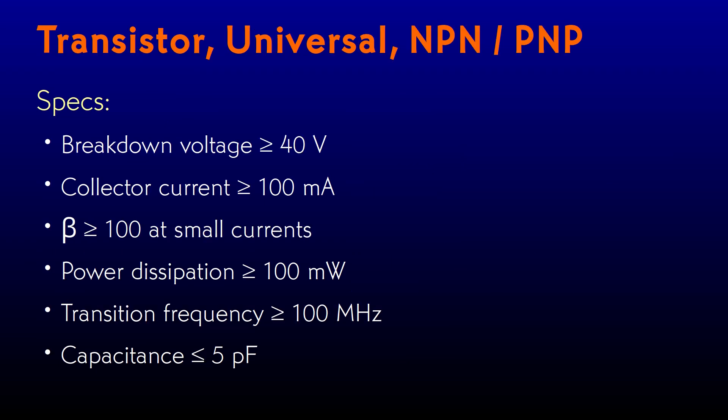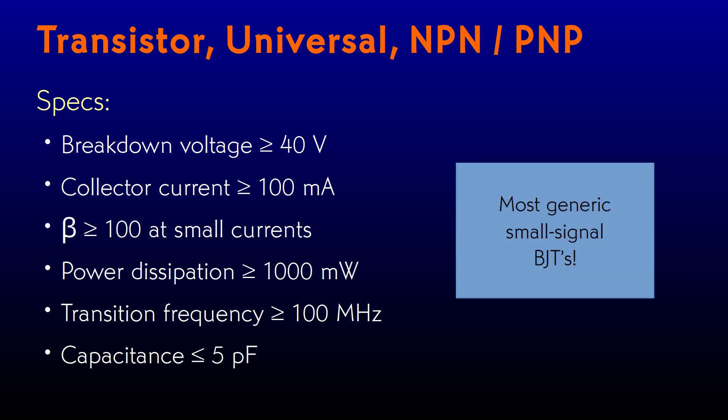Now moving on to transistors. Most of my designs use universal transistors just as they use universal diodes. A universal transistor will have at least the same 40-volt breakdown voltage to have a comfortable margin with 24 or 30-volt supplies. A TO-92 package will handle at least about 200 milliamps of collector current and dissipate about a quarter watt. Some of the surface mount ones are a little smaller, so I say a universal one will handle 100 milliamps and 100 milliwatts. It should have a beta of at least 100 at small currents, be reasonably fast with a 100 MHz transition frequency, and no more than 5 picofarads of capacitance between collector and base. A whole raft of popular BJTs will fit all these non-demanding specs.